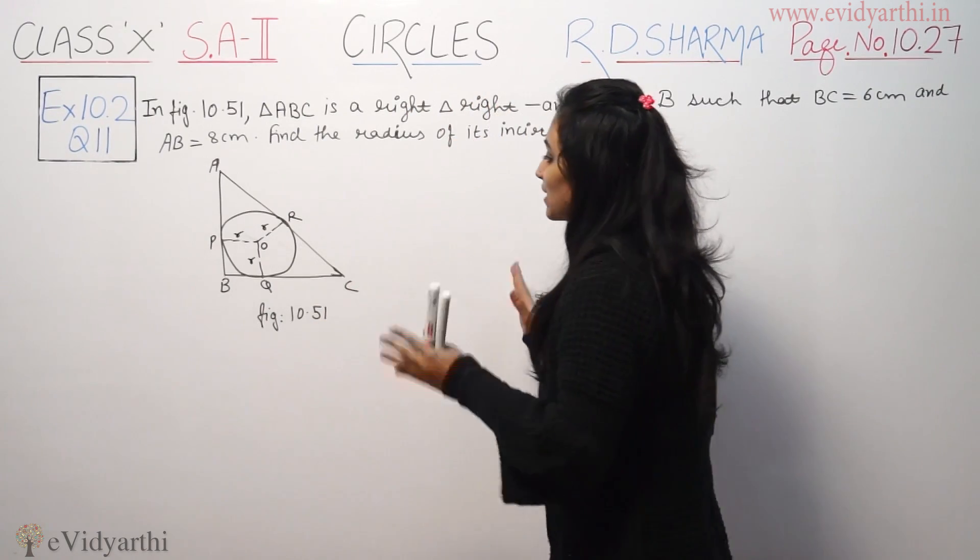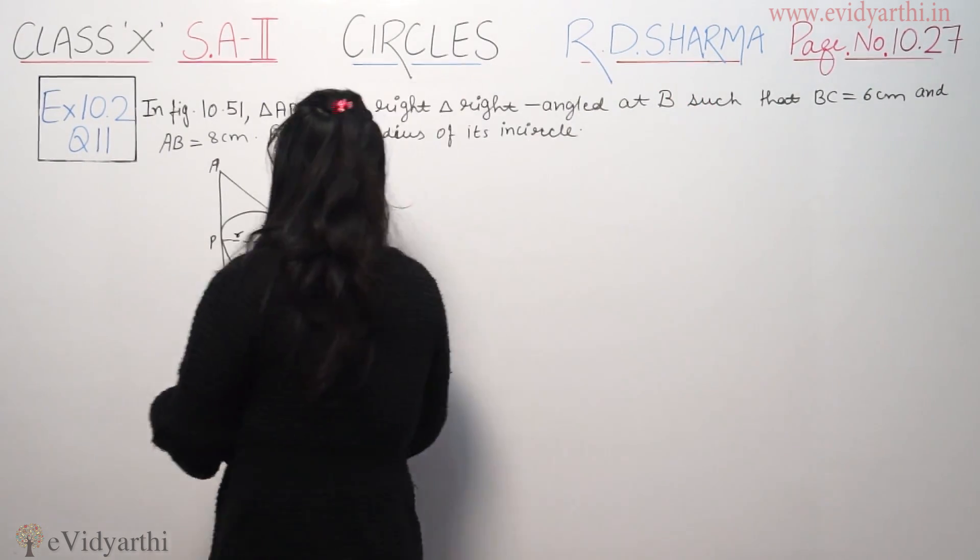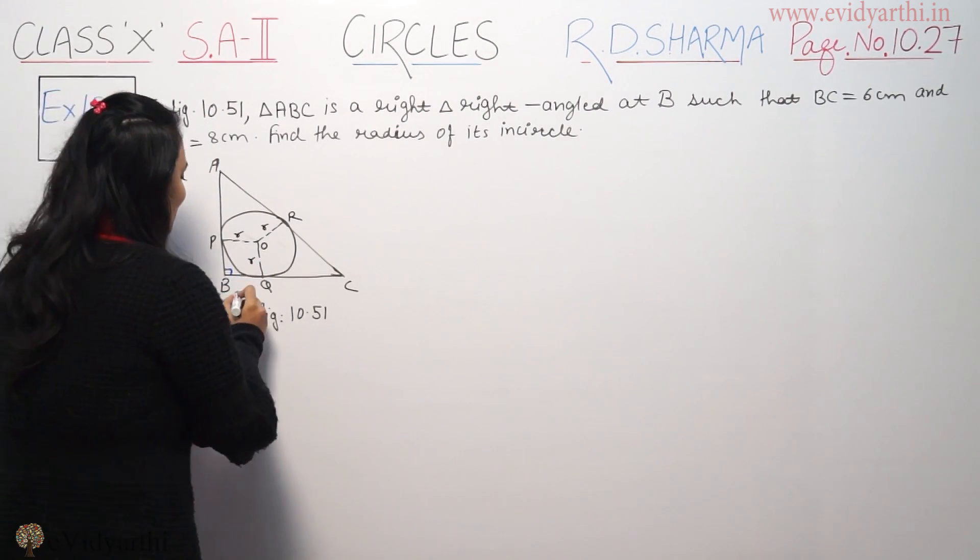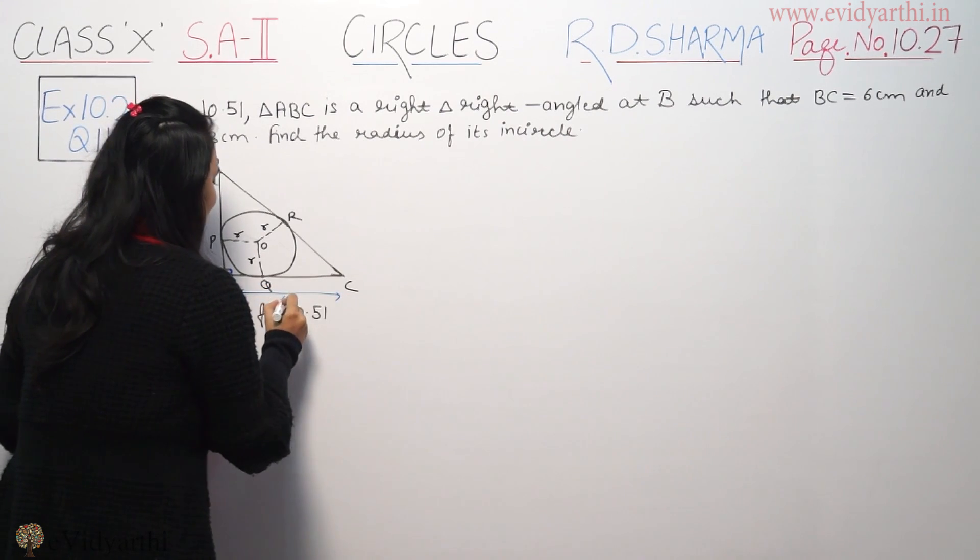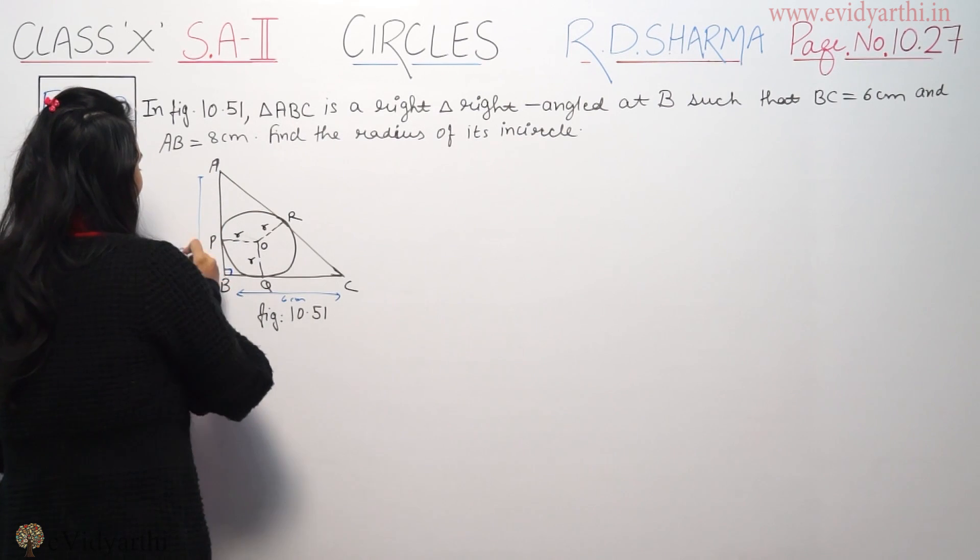In question 10.51, triangle ABC is right angle at B such that BC is 6 cm, the entire length, and AB is 8 cm.